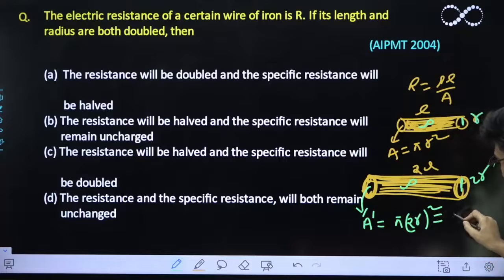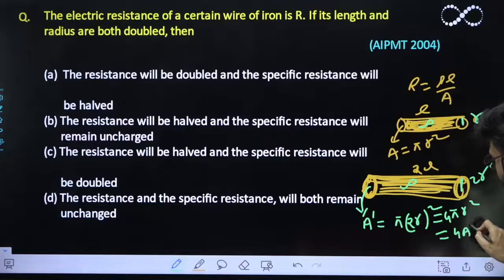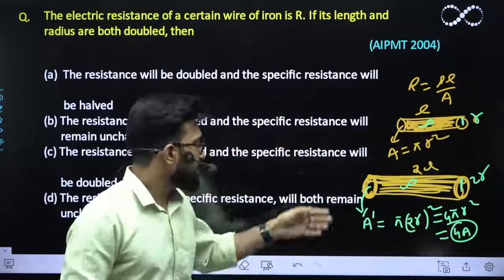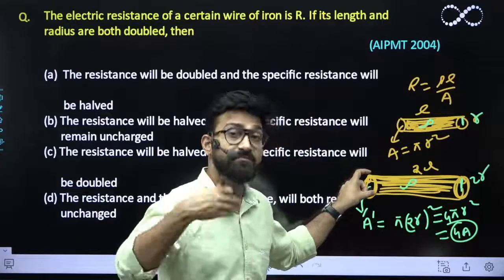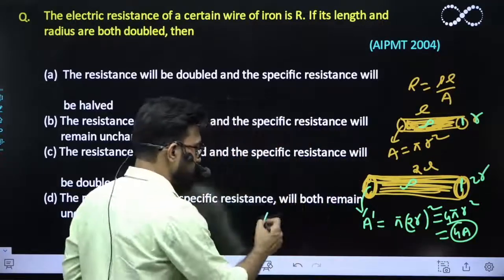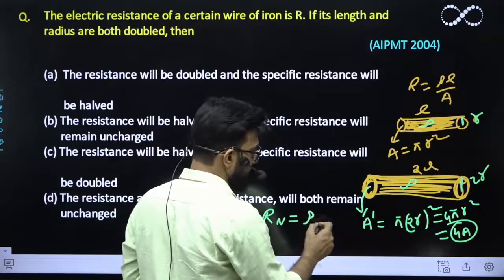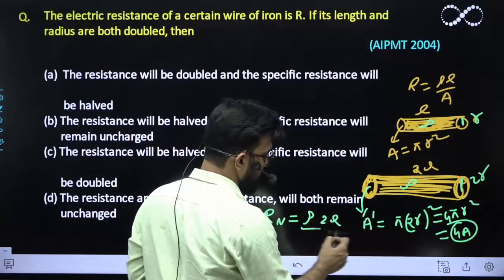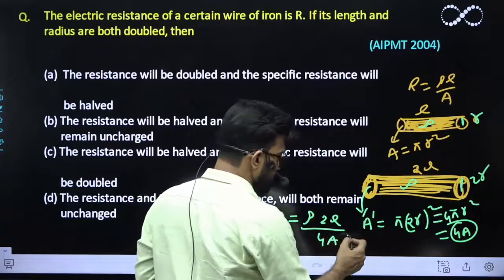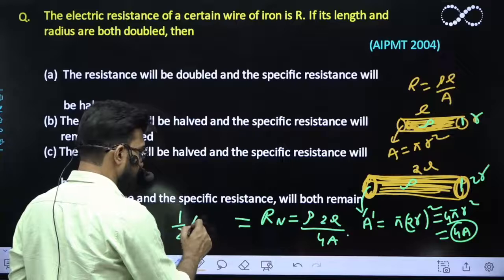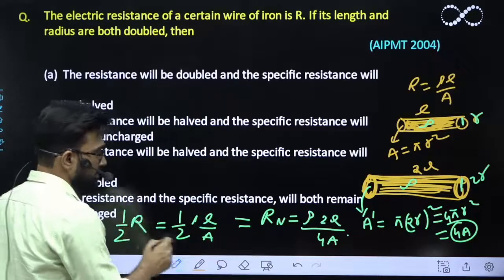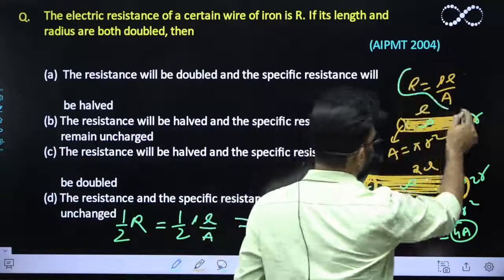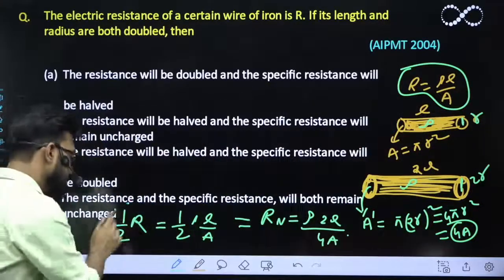So now the new area comes out to be 4 times of R square, and the new resistance is half of Rho L by A which is nothing but half of the previous resistance. Because its resistance over here is Rho L by A. So it becomes half.